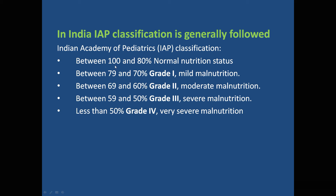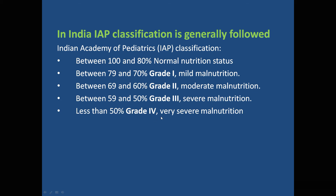The IAP classification, followed in India, grades children as follows: weight for age or height for age between 80–100 percent of the reference is labeled as normal. Between 70–80 percent is grade one — mild malnutrition. Between 60–70 percent is grade two. Between 50–60 percent is grade three. Less than 50 percent is grade four — very severe malnutrition.